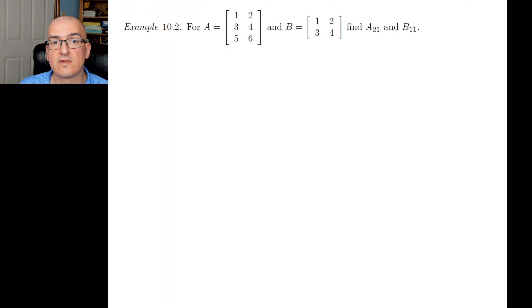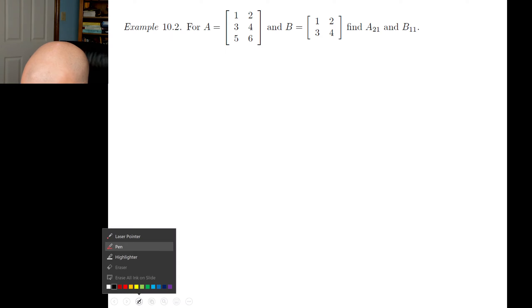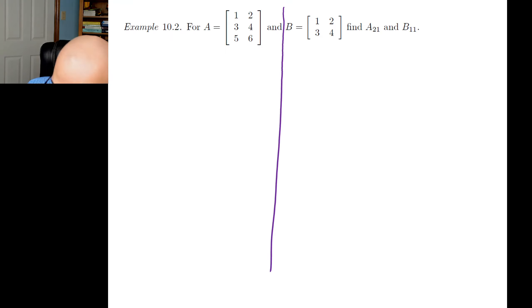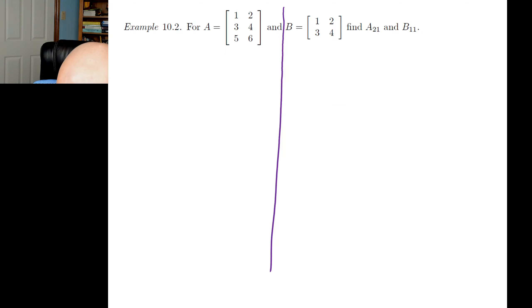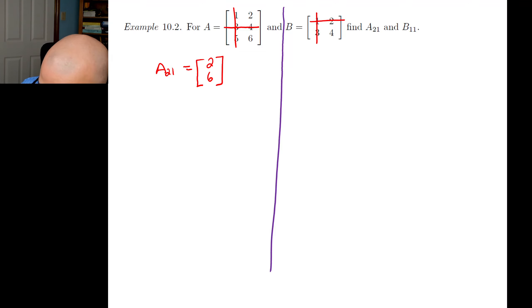Even though submatrices for non-square matrices won't help with determinant calculations later, we can still define them. For matrix A, finding A21: cross out row 2, cross out column 1 — the result is a column matrix with elements 2 and 6. For B11: cross out row 1, cross out column 1 — B11 is just the single element 4.